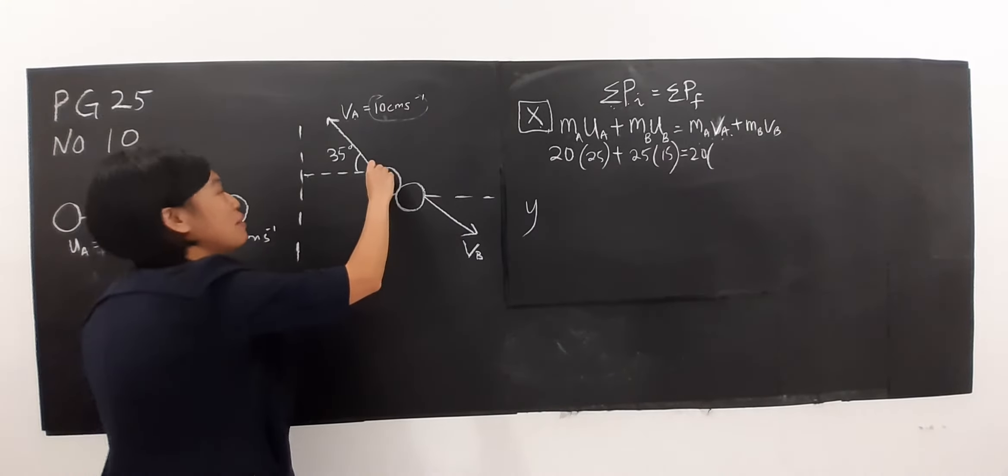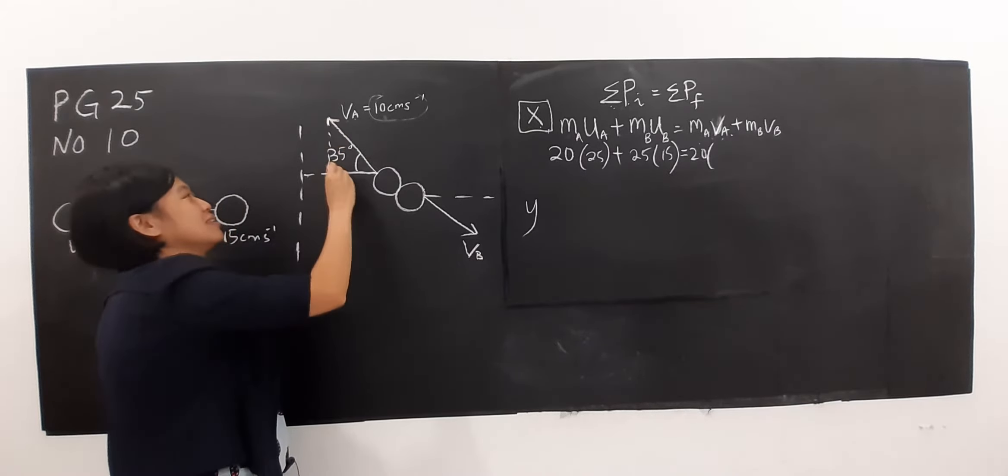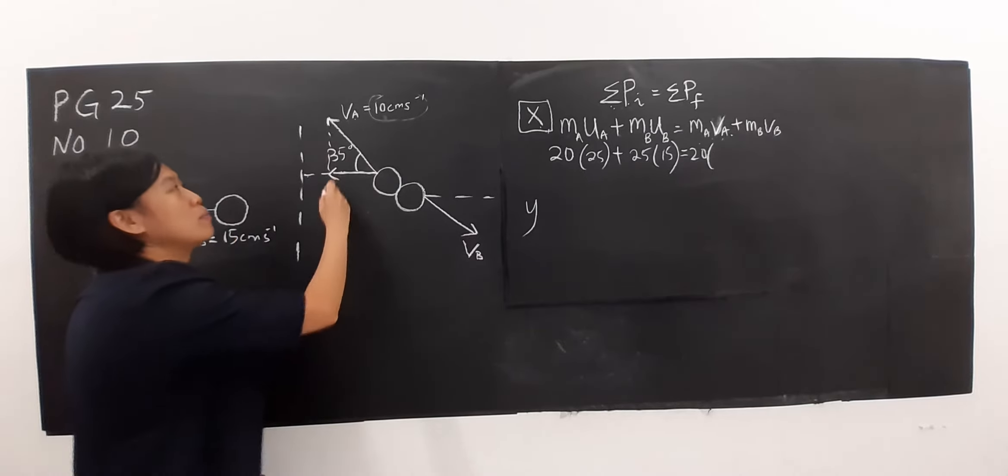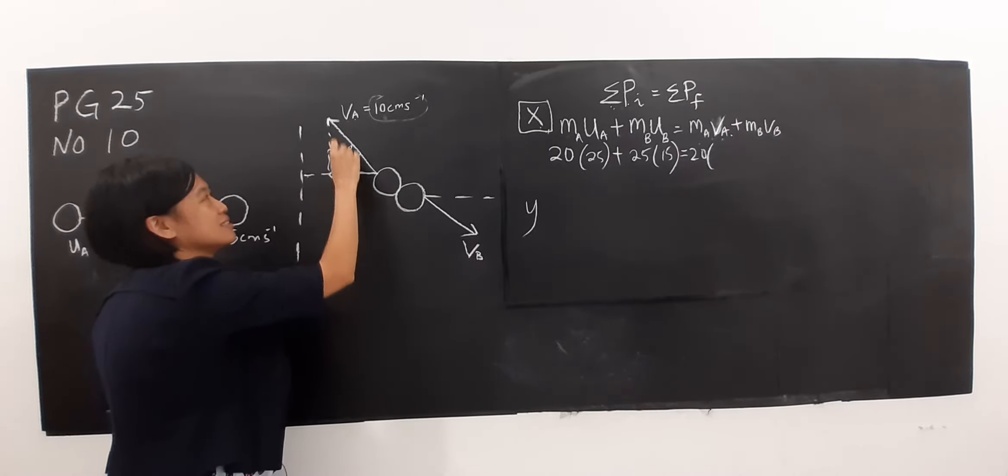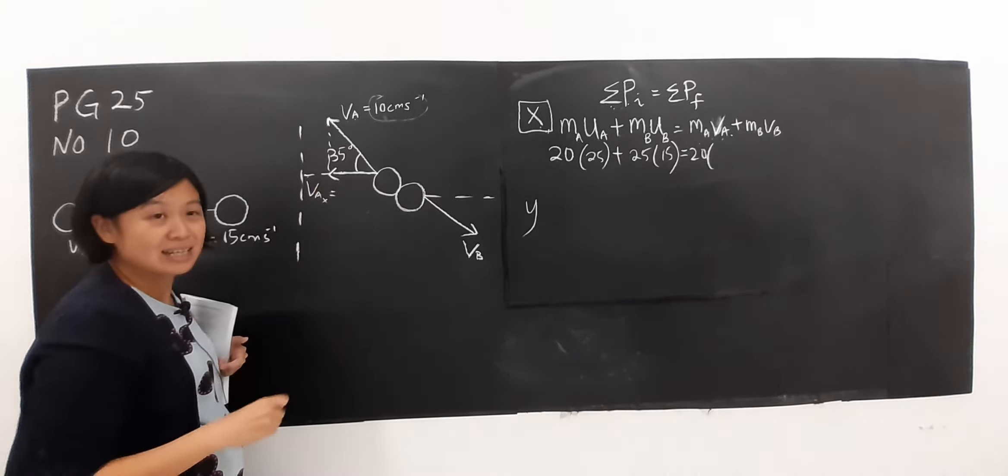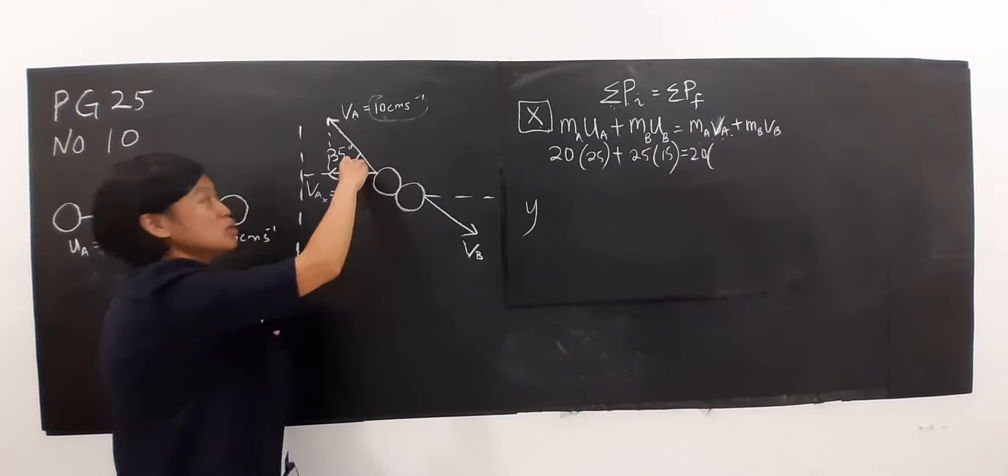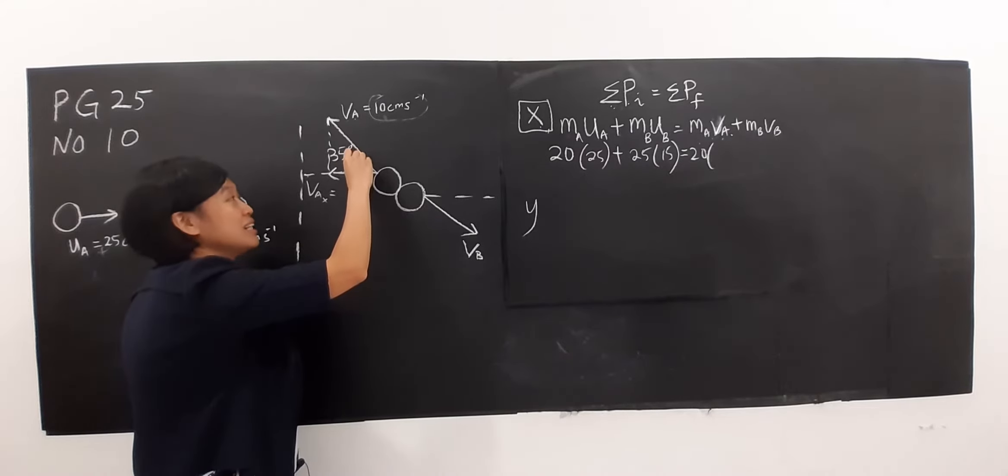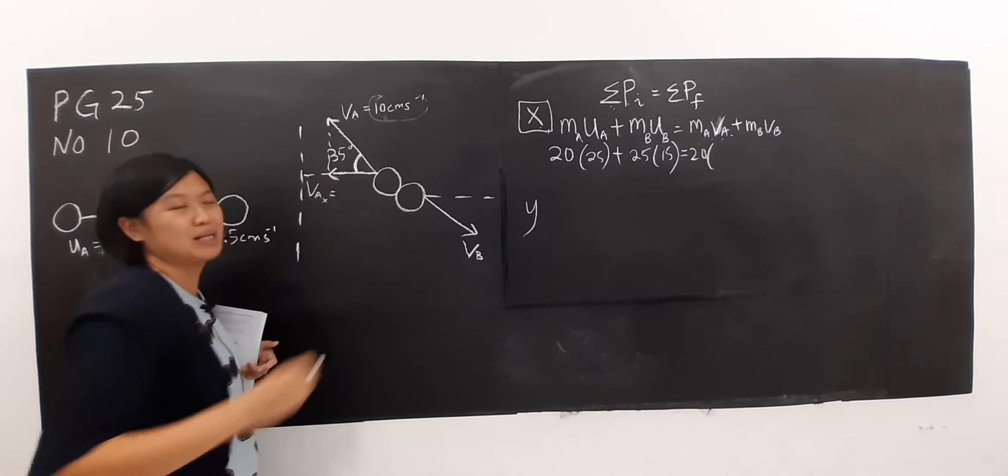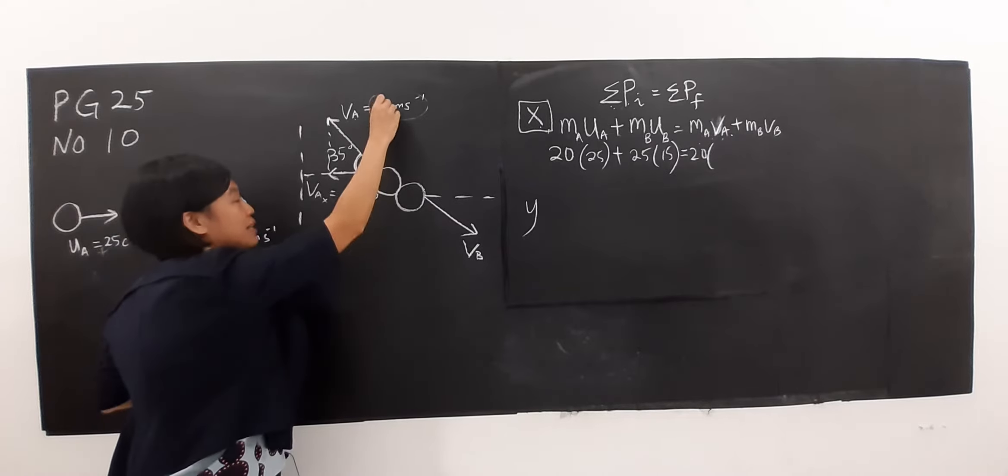Can you substitute the value 10 here? Actually you cannot, because if we solve this question using this value only, you actually cannot get the answer. So you should know that for the vector given in this direction, it doesn't help to solve the problem. So what do I do? I must do resolving here so the vector is resolved into x and y components where this is VAX.